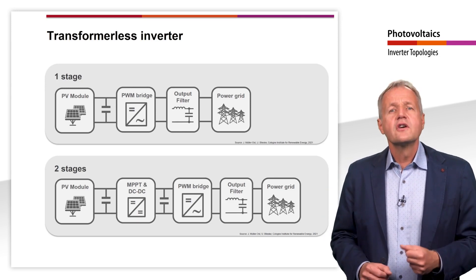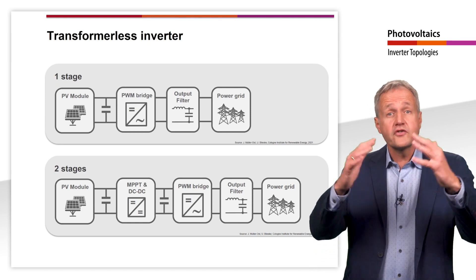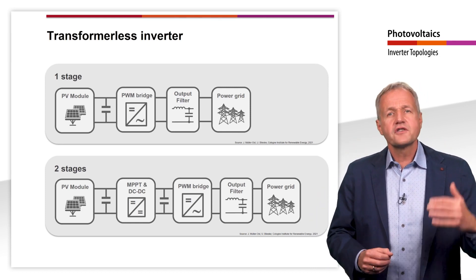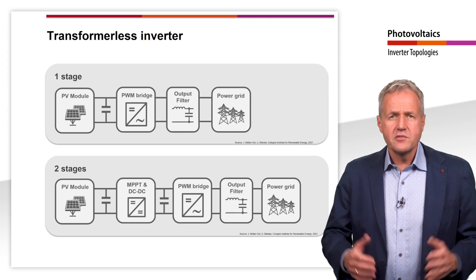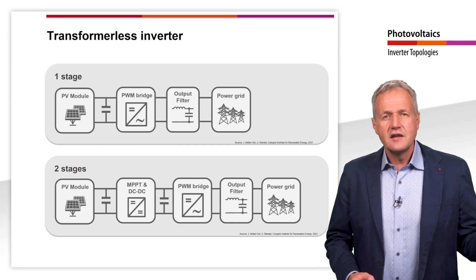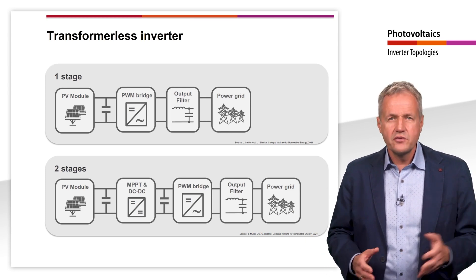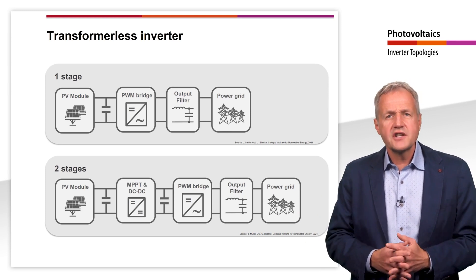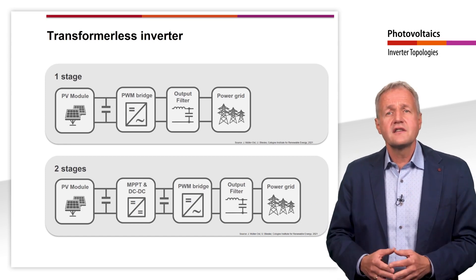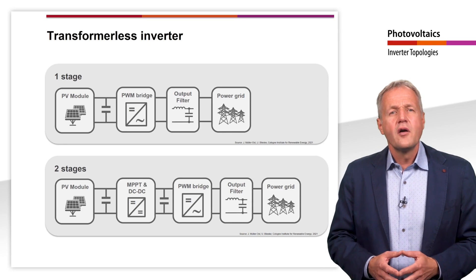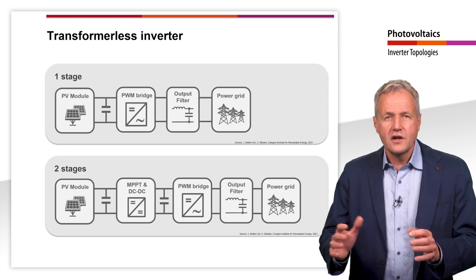As an alternative, two-stage inverters are used. Here the voltage is converted to a specific DC voltage by a boost converter. This direct voltage is then converted into alternating current by the PWM bridge. The additional voltage level gives much more freedom for the design of the solar generator, since the input voltage can now also be lower. Most of the transformerless inverters installed today contain such a boost converter. The advantage of the larger input voltage range, however, is bought at the cost of a somewhat lower degree of efficiency, since every voltage conversion is associated with losses. For this reason, modern solar inverters do have the option to bypass the boost converter in case the DC output voltage of the solar generator is high enough.